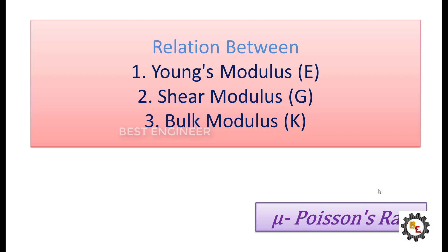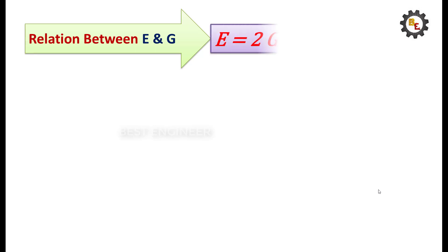Relationship between Young's modulus E and shear modulus G: E equals 2G into (1 + mu).